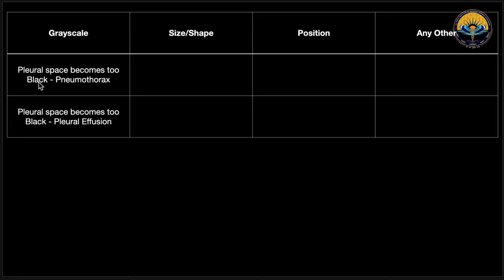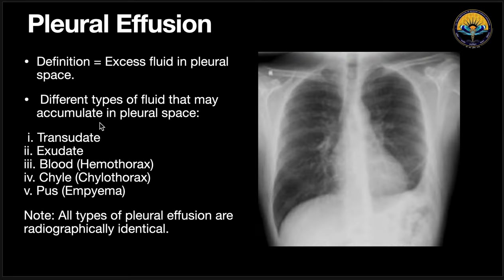Pathology of the pleura: the pleura could appear too black or too white. If the pleura appears too black, it is pneumothorax. If the pleura appears too white, it is pleural effusion. We are going to discuss two situations: first where the pleura appears too white, which is pleural effusion.